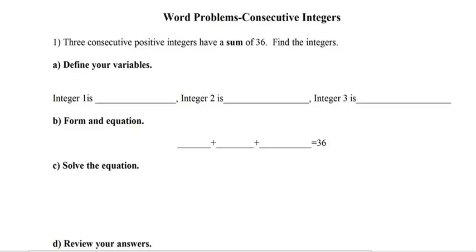These are consecutive integer word problems, and the way you can tell they're consecutive integer problems is they say consecutive integers. The way you start them is to write out an example of what they're asking for. So three consecutive positive integers would be one, two, three, those are consecutive positive integers.